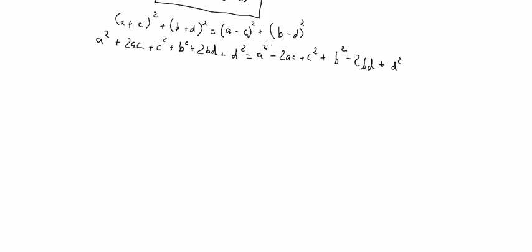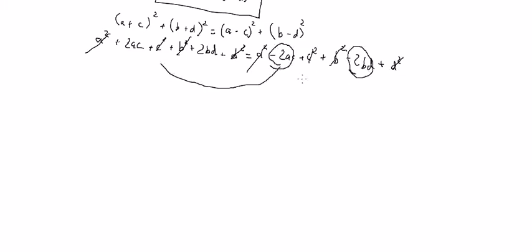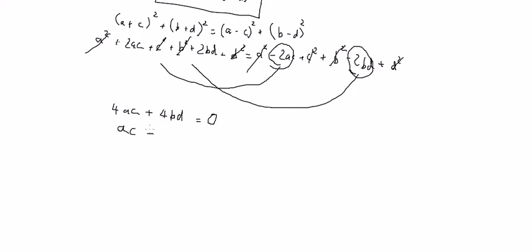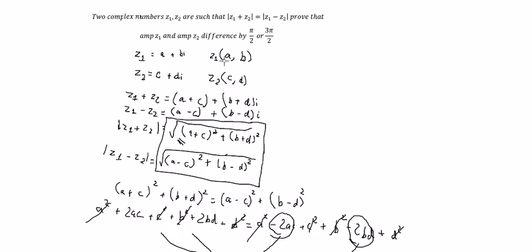Now we simplify by canceling matching terms on both sides. Moving remaining terms to the left gives us 4ac plus 4bd equals zero. Dividing both sides by 4, we get ac plus bd equals zero.